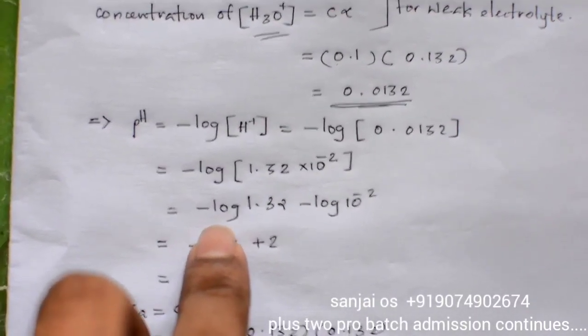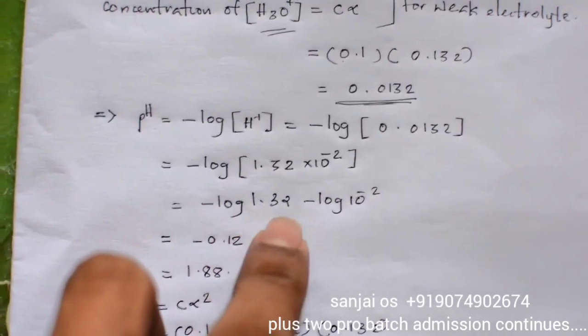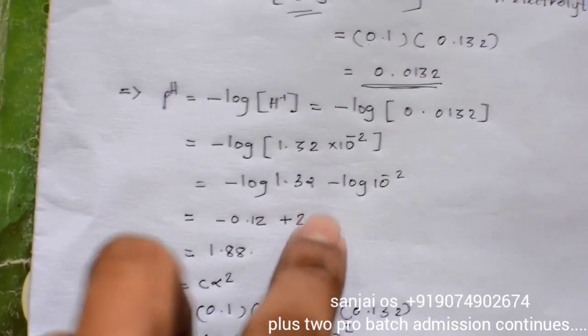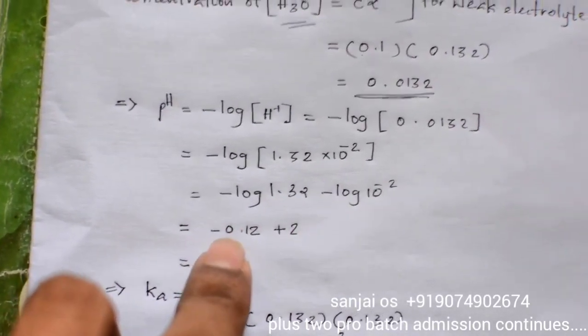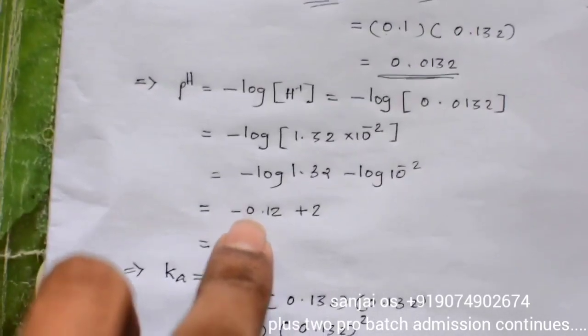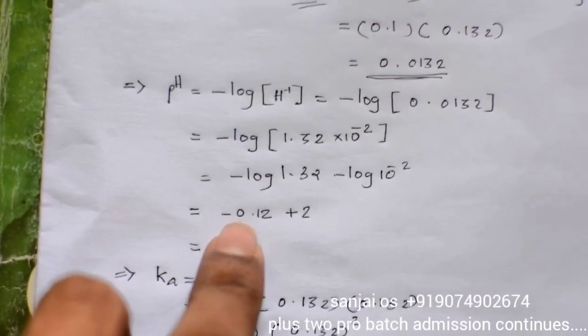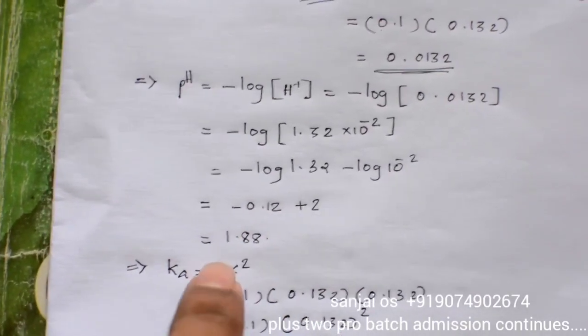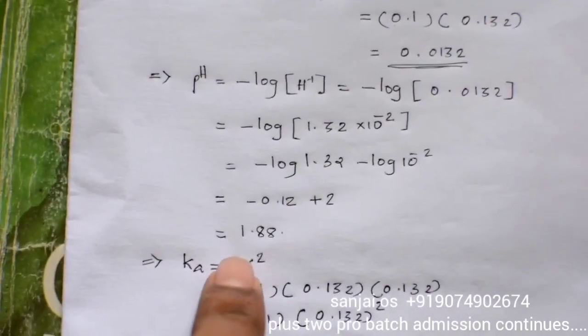Log 1.32 minus log 10 raised to minus 2. Value is minus 0.12 plus 2, which equals 1.88.